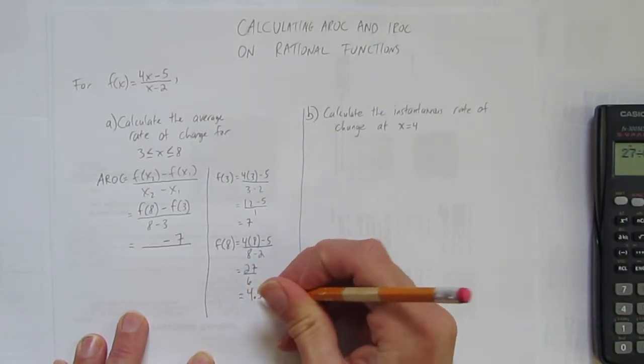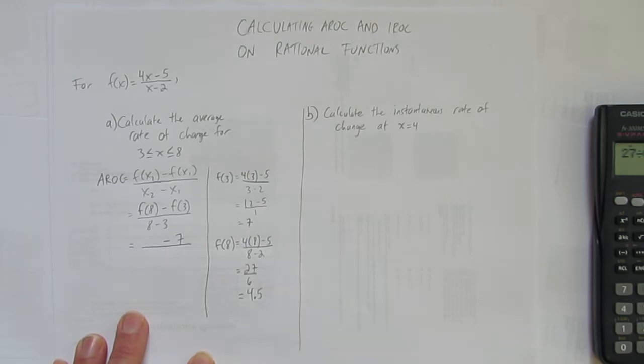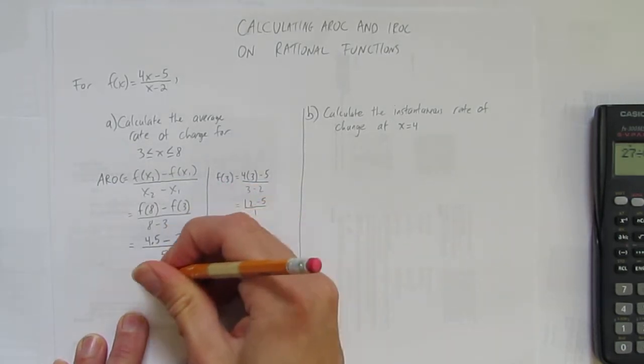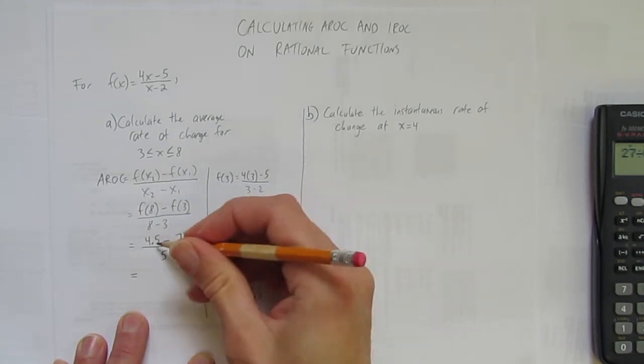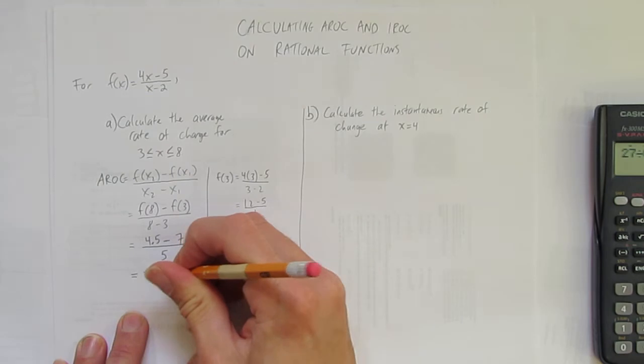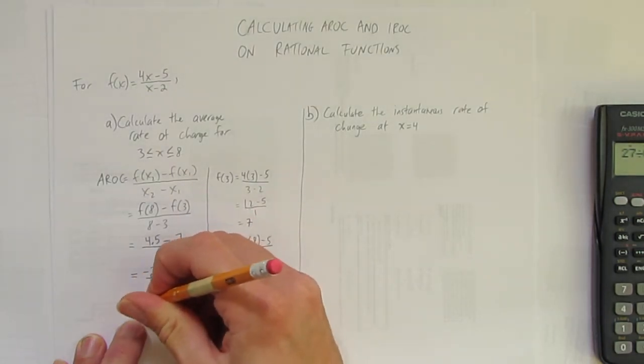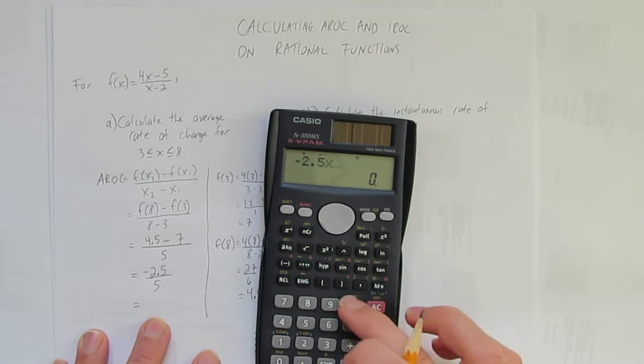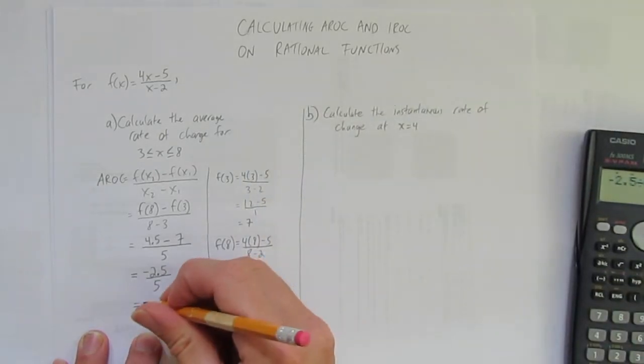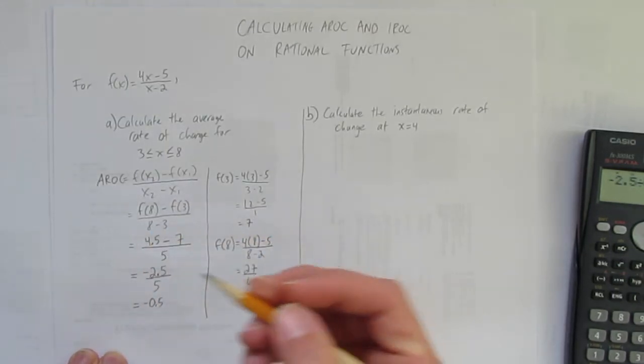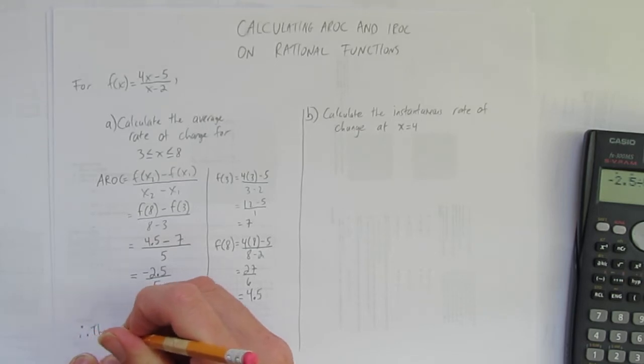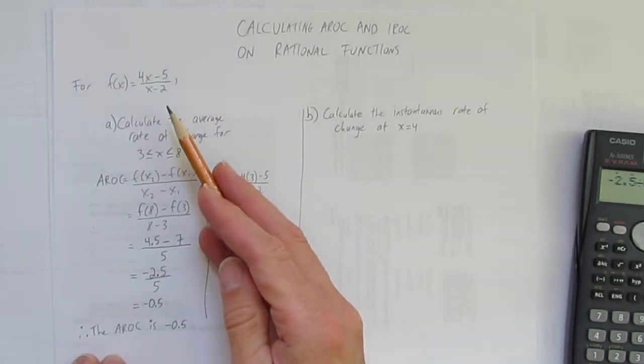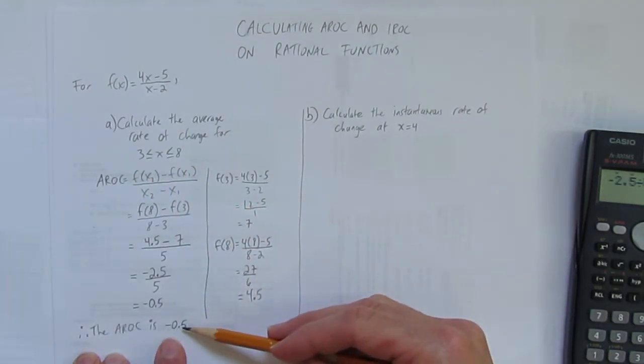You can do 27 divided by 6 in your head if you want. You should write it out as a decimal here. It's a nice decimal, 4.5. Just because we're going to be working with decimals sometimes in these questions. 4.5 is f(8). And on the bottom, 8 - 3, that's pretty easy, 5. So the AROC here is 4.5 - 7, that's -2.5 divided by 5. That's -0.5. Please always end your AROC statements with a therefore. The AROC is -0.5. The average rate of change of this function, its average slope between 3 and 8, is -0.5.